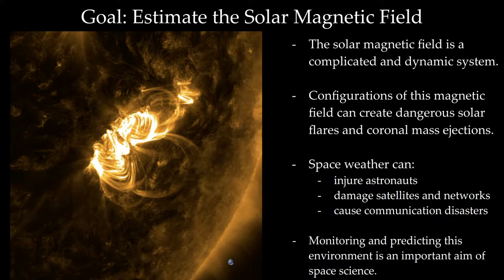Our paper aims to estimate the solar magnetic field. The reason the solar magnetic field is important is that different configurations of it can lead to dangerous solar flares and coronal mass ejections, and generally space weather that can injure astronauts, damage satellites, and cause communication disasters. So if we can predict and understand what this magnetic field is, that would be great.